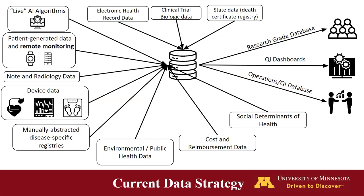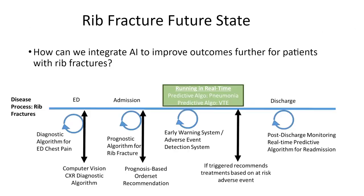You could generate a prognostic AI model that predicts who has the probability of dying and identify an optimal threshold when ICU admission improves patient outcomes. This gets us back to our database — if we had only collected 200–400 data elements, we wouldn't have the data needed to start individualizing care. Fortunately, our database has over 10,000 processed or flattened variables that we can use.